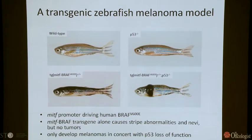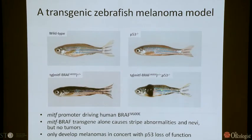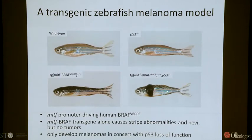These animals by themselves never went on to develop melanoma except in extremely rare cases. But when they were crossed with a P53 loss-of-function mutant, these are the animals that resulted. I'll refer to these as the BRAF P53 model because they essentially developed very aggressive invasive melanomas, in addition to other pigmentation and stripe abnormalities.